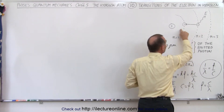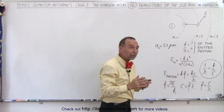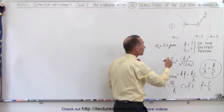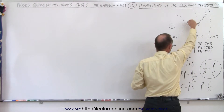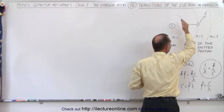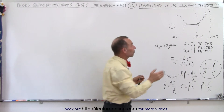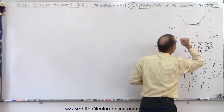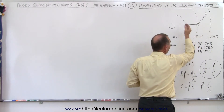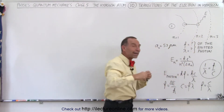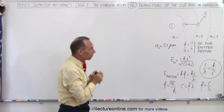For example, from n equals 1 to n equals 2, the difference is 10.2 electron volts. So a photon must hit the electron and the energy of that photon must be exactly 10.2 electron volts to allow it to jump to the next level. In reverse, an electron can jump from the second level down to the first level by emitting a photon of that exact energy difference of 10.2 electron volts.